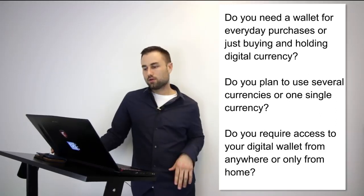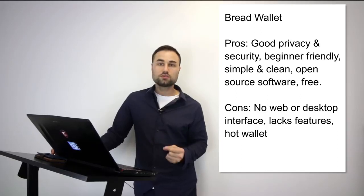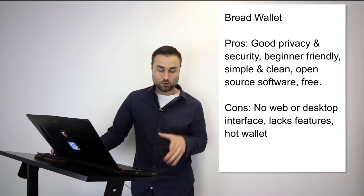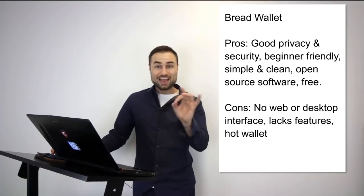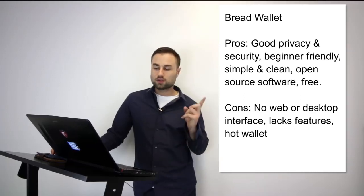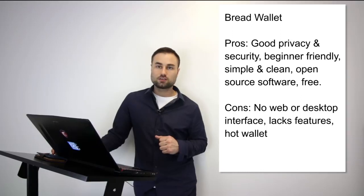Now we're getting into the actual recommendations with pros and cons. First is the Bread Wallet. It's a simple wallet — literally made for a child because the user interface is so simple. It's specifically just for Bitcoin, no other currencies. The pros are it's very good on privacy, beginner-friendly, open source, free, simple, and clean.